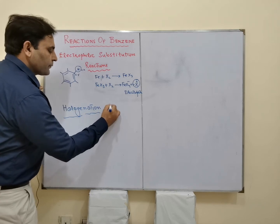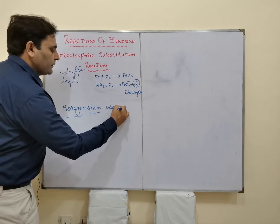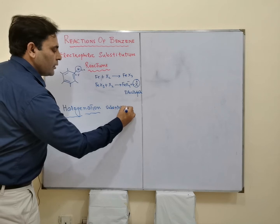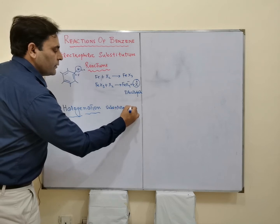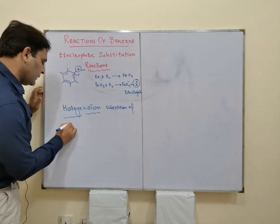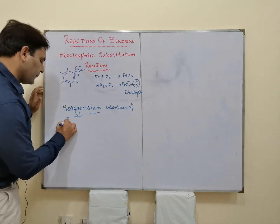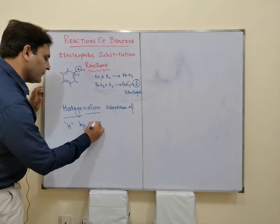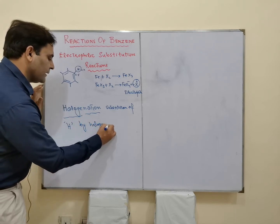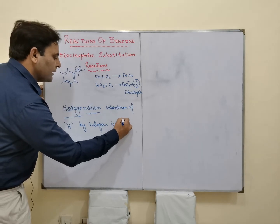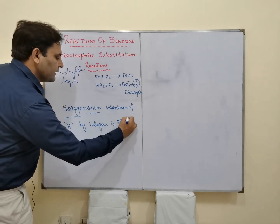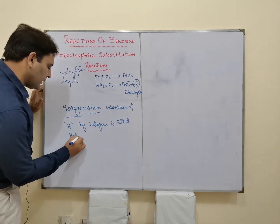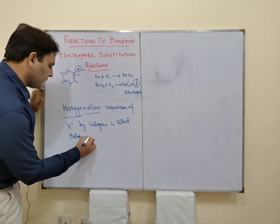The substitution of hydrogen by halogen is called halogenation.